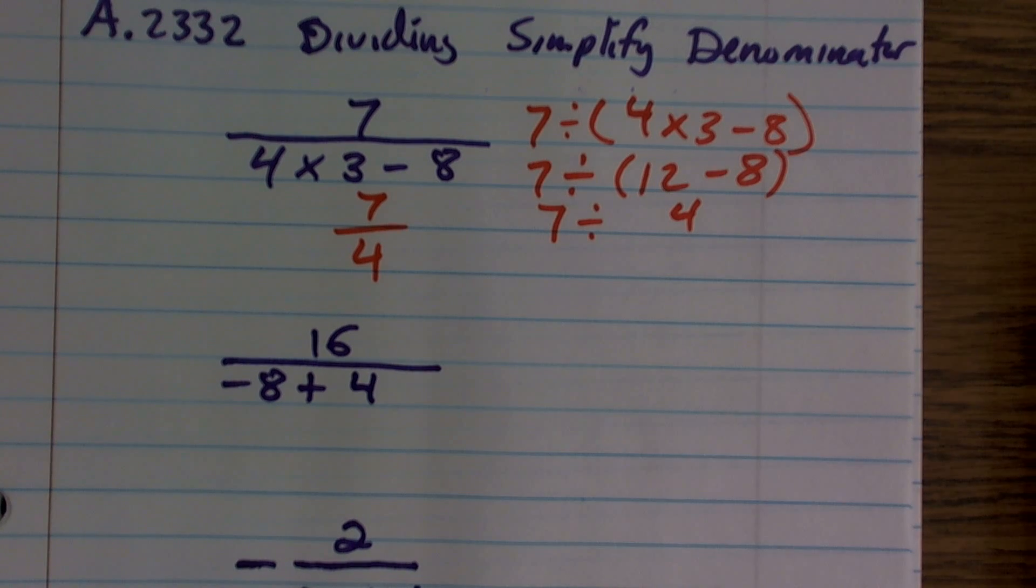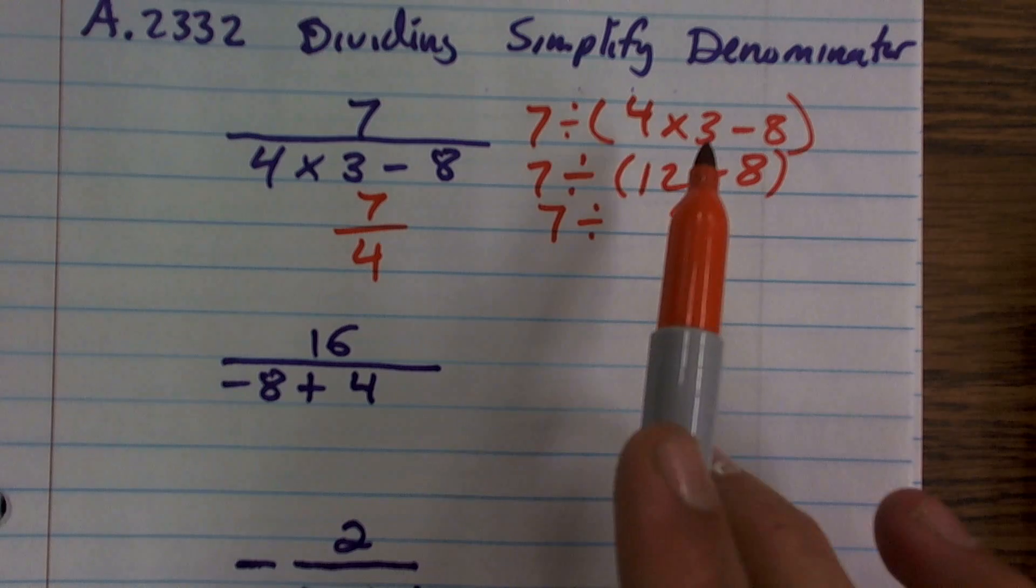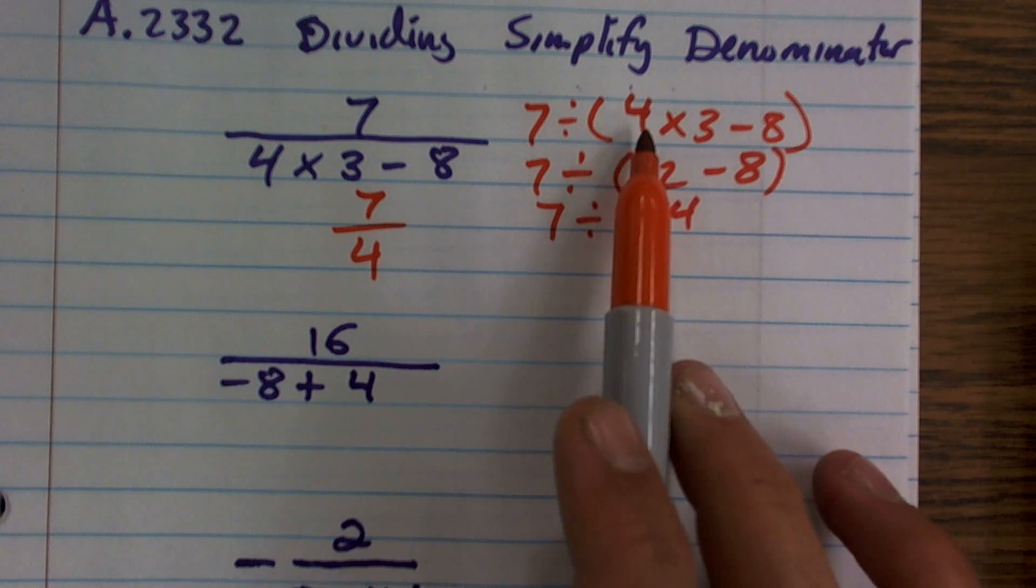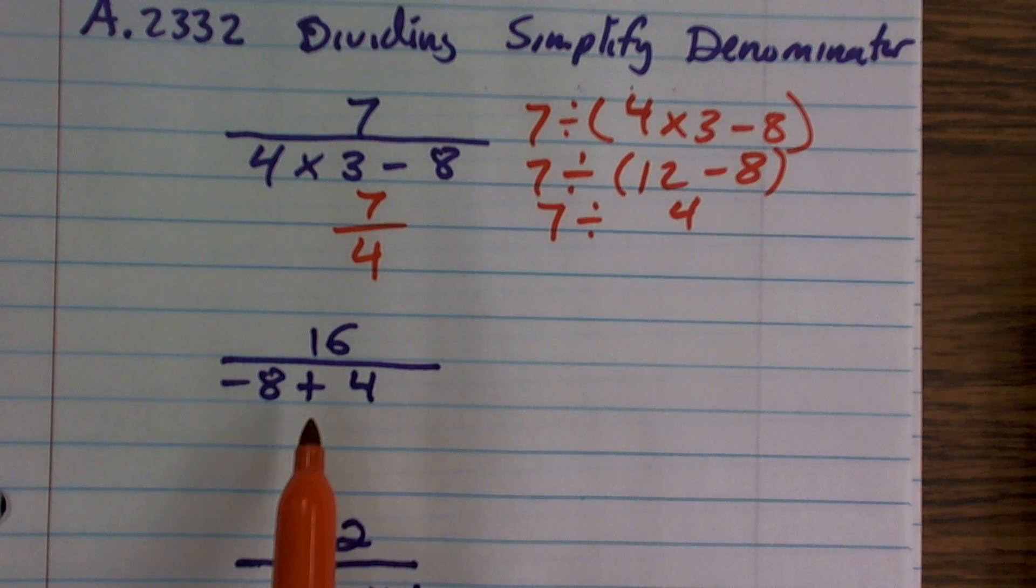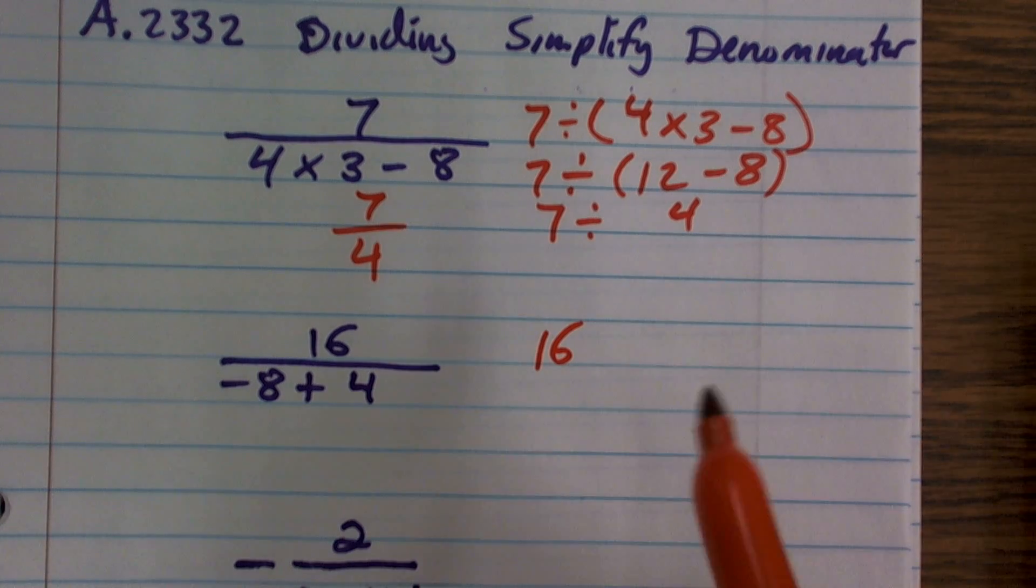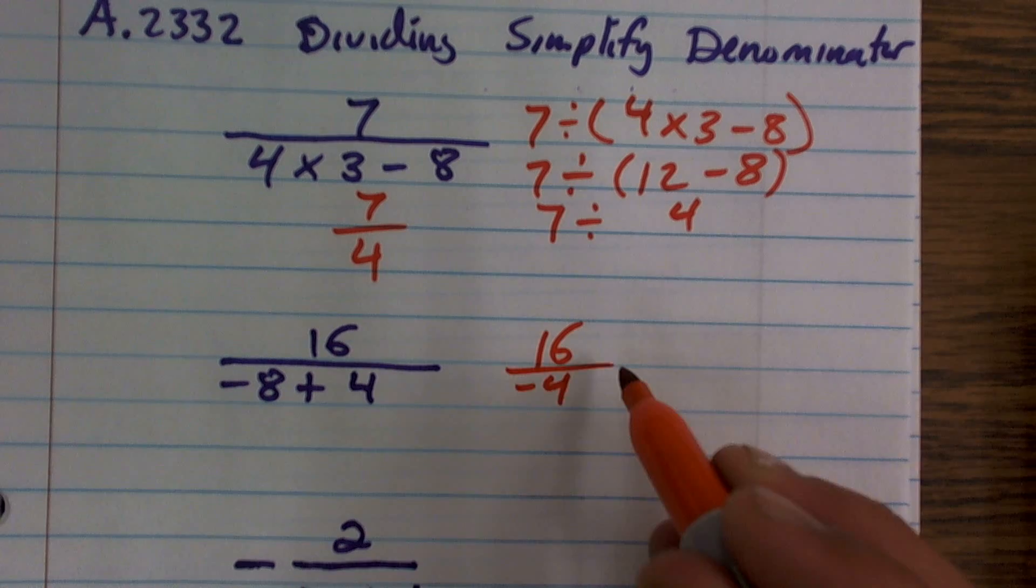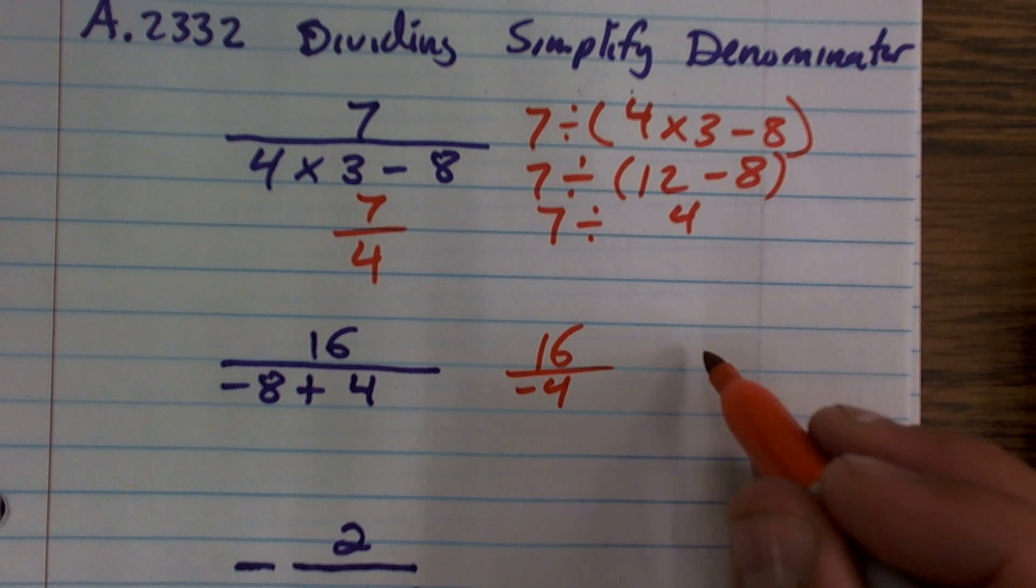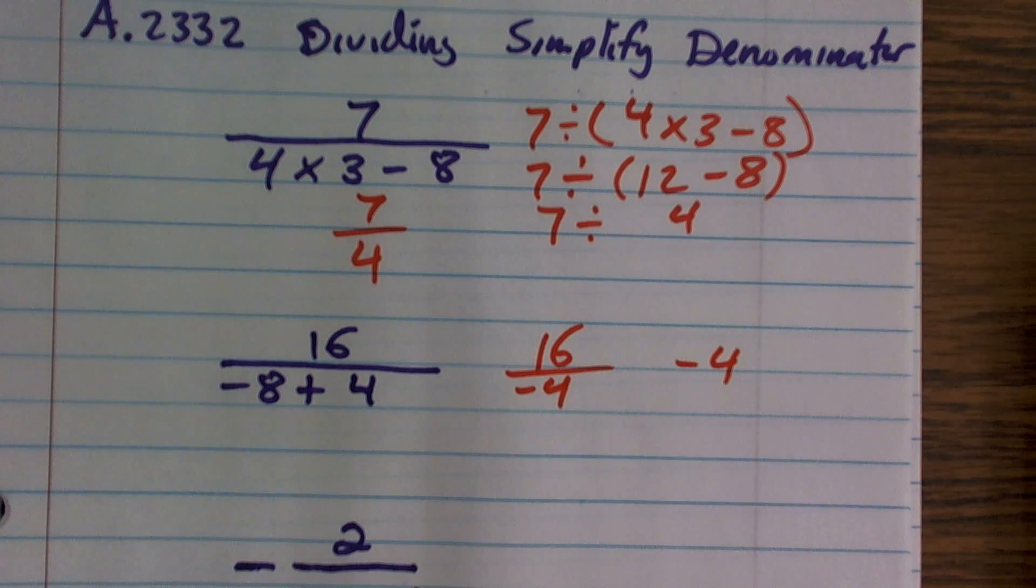Now here, once you understand when you look at this, all we really need to do then is just simplify my denominator. So here, I have 16. Negative 8 plus 4 is just going to give me a negative 4. 16 divided by negative 4 simply just leaves me with a negative 4.